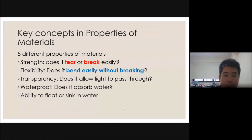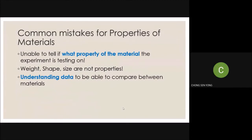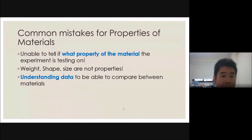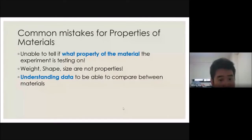Some of you are unable to identify which property an experiment is testing — for example, if the experiment is about strength, you cannot tell. This is something we need to work on as an exam technique. Also, weight, shape, and size are NOT properties. You only have five properties: strength, flexibility, float and sink, waterproof or not, and transparency — whether light passes through.